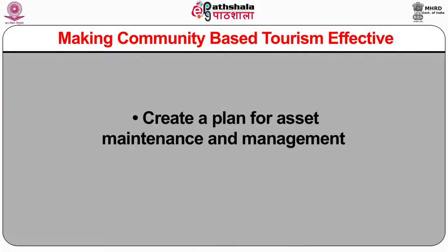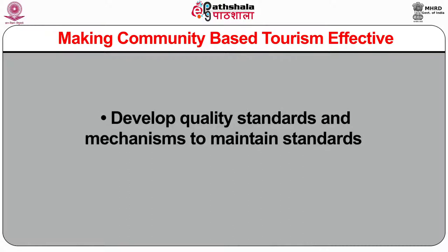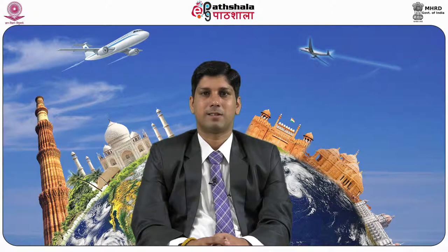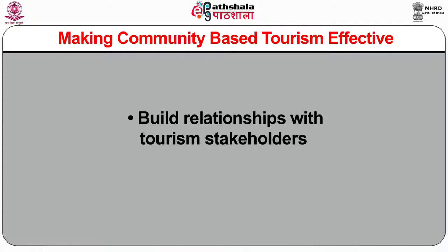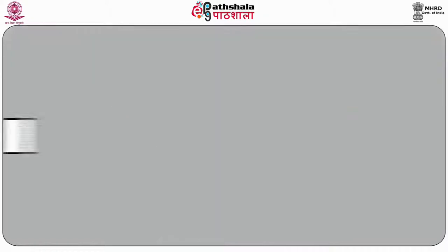There should be a plan for asset maintenance and management. To manage supply and demand for sustainability in the concerned area, develop quality standards and mechanisms to maintain standards within the community for community based tourism. Capacity building and training of communities by providing them adequate skill-based learning. The next one is to manage the change process and develop a proper leadership team. Develop a proper marketing plan so as to attract international tourists at the destinations. Build relationships with tourism stakeholders for the smoother and proper functioning of tourism. Collaborate with tourism authorities and private sector tour operators.